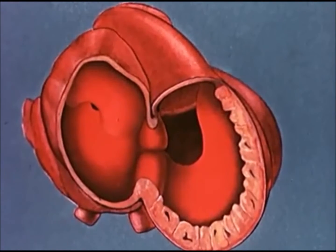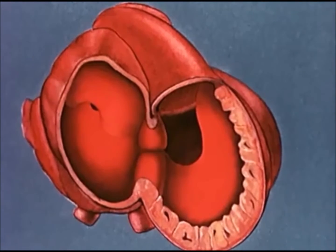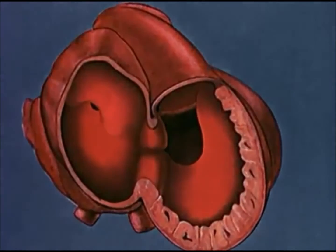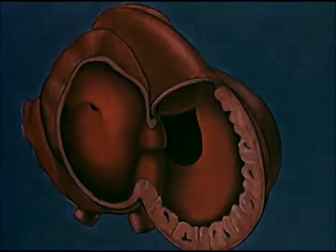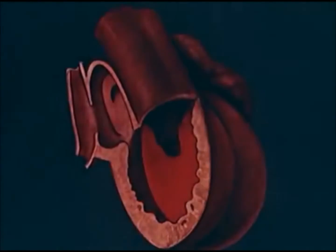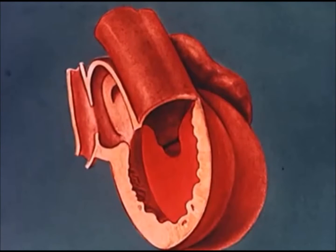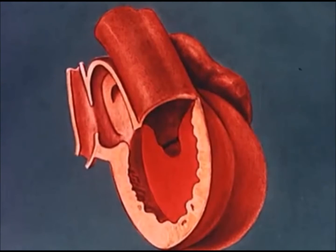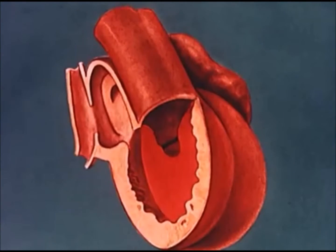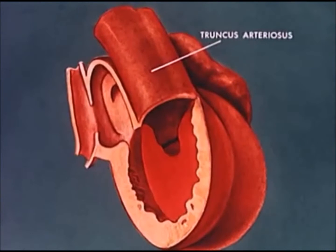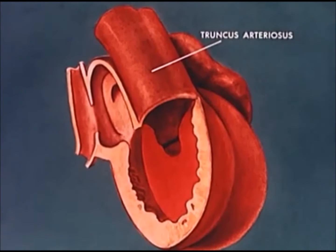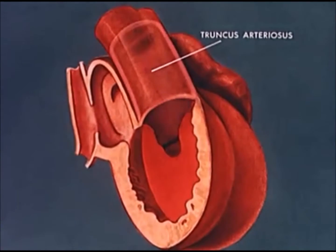Pulmonary artery. The formation of this partition is more clearly seen if the heart is turned by 45 degrees. Originally the right and left ventricles share a common outflow channel, the truncus arteriosus, which gives rise to the aortic arches. The truncus arteriosus is presented schematically as a transparent cylinder.